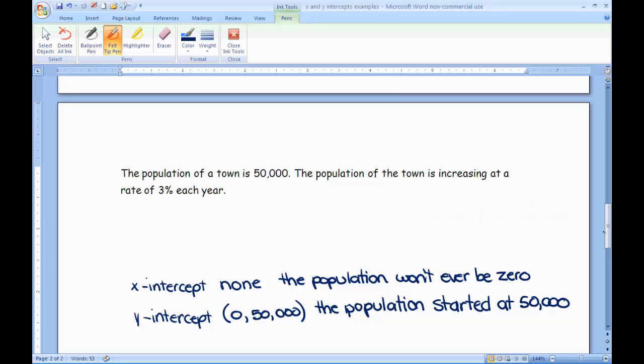You could also look at an equation for this. If I wanted to, I could say that it was y = 50,000 × 1.03^x, that's the growth rate. Notice I could then do what I did with the equations before, let y be 0, and then let x be 0. You'd still get the same answers. So you can use an equation if you want.